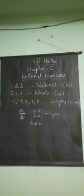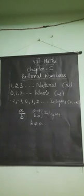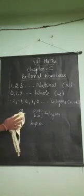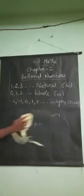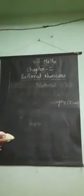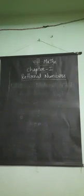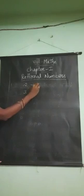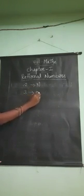Next, A by B is a rational number. What is another name for that number? That number is a fraction number. In small classes you have studied fractions. What is a fraction? One numerator and one denominator — the top of the number is the numerator, the bottom of the number is the denominator. For example, 2 by 3: 2 is called the numerator and 3 is called the denominator.